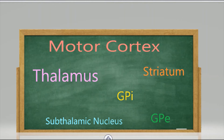Here we're going to have a mnemonic for the basal ganglia, the direct and indirect pathways. Let's start with the direct pathway. The direct pathway goes from the motor cortex to the striatum, to the globus pallidus internus, to the thalamus, and then back to the motor cortex.